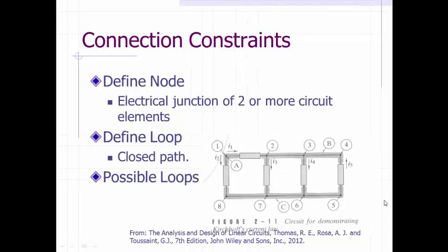First, let's define node. A node is defined as the electrical junction of two or more circuit elements. In this example, let's look at how many nodes we have. Obviously, this is a node because it's a junction between this element and this element. Here is a node, here looks like another node, and number four looks like another node.